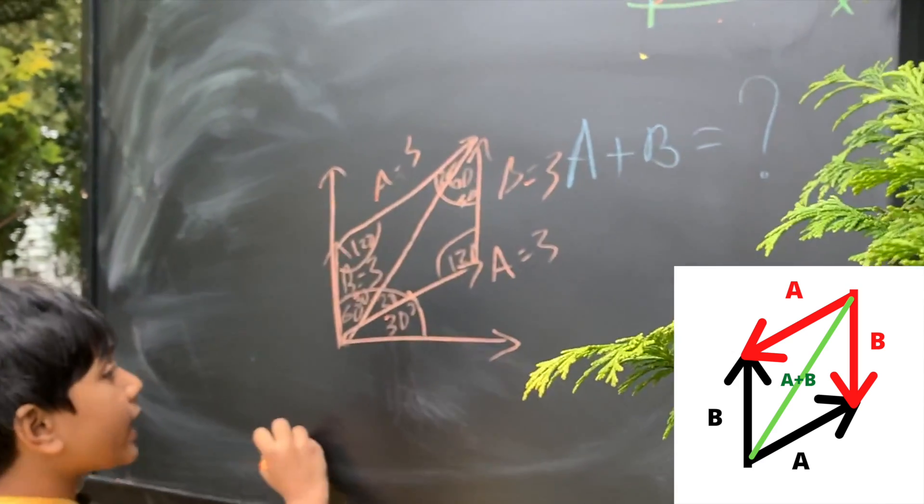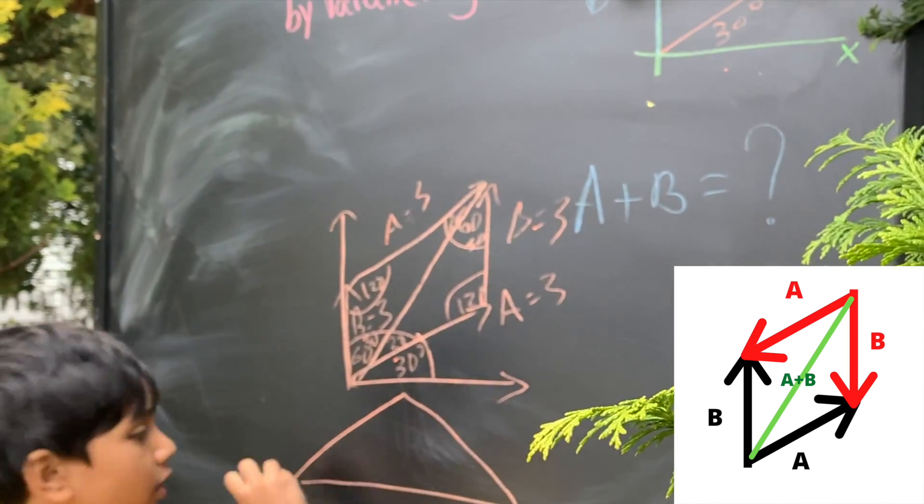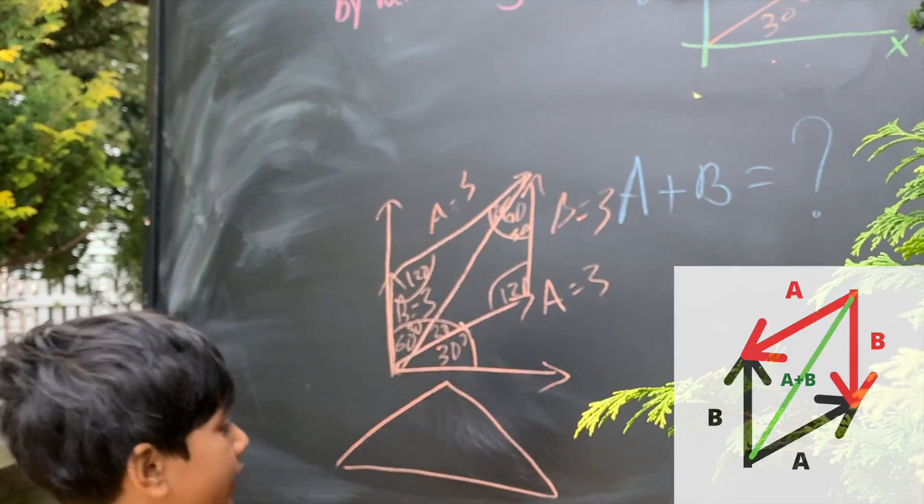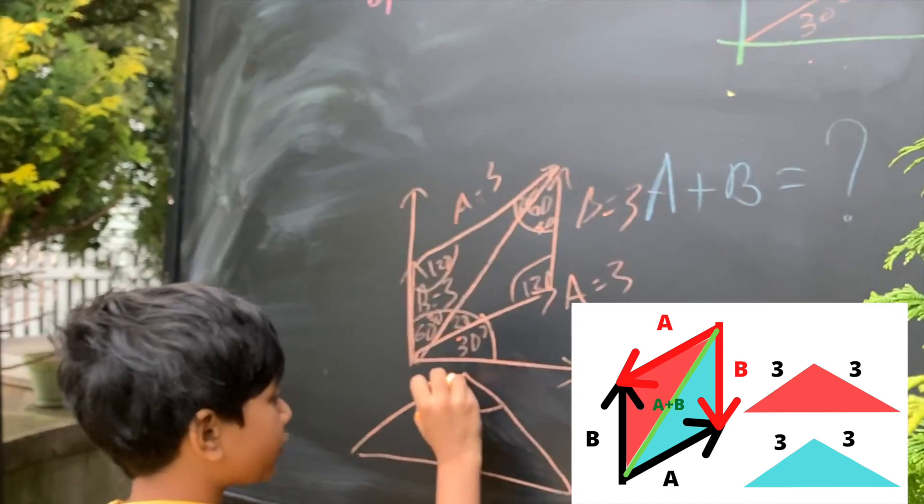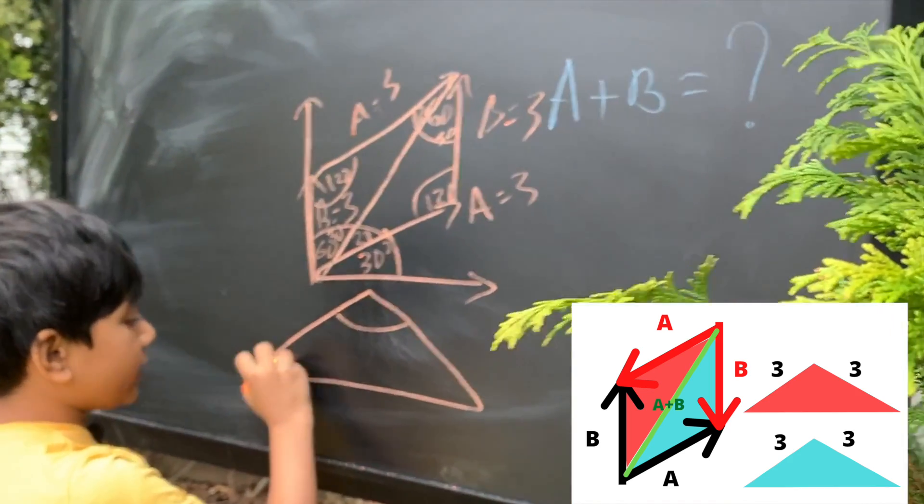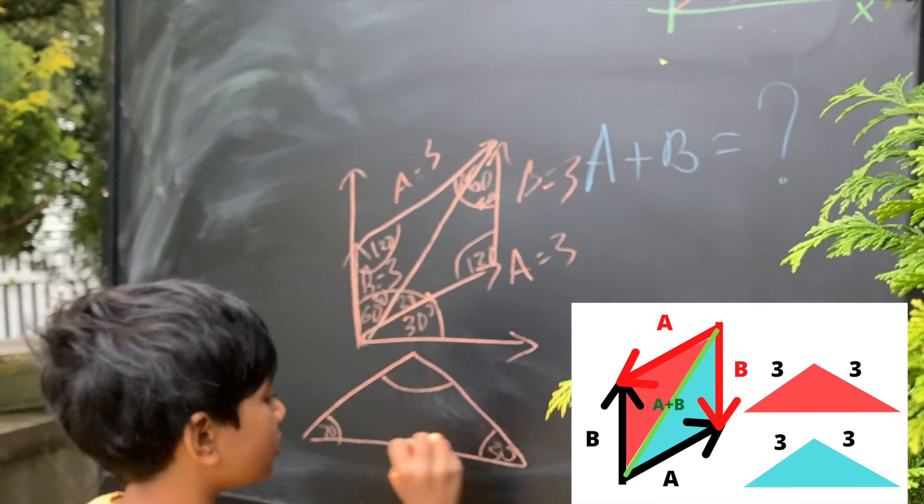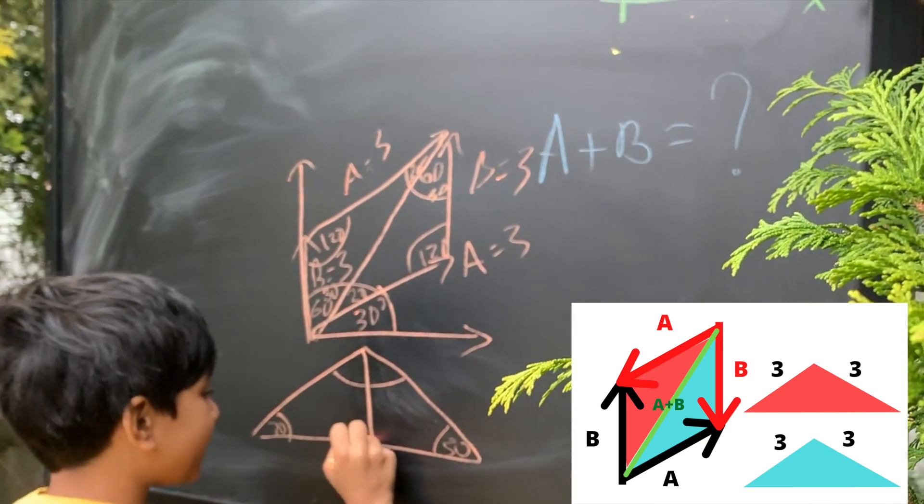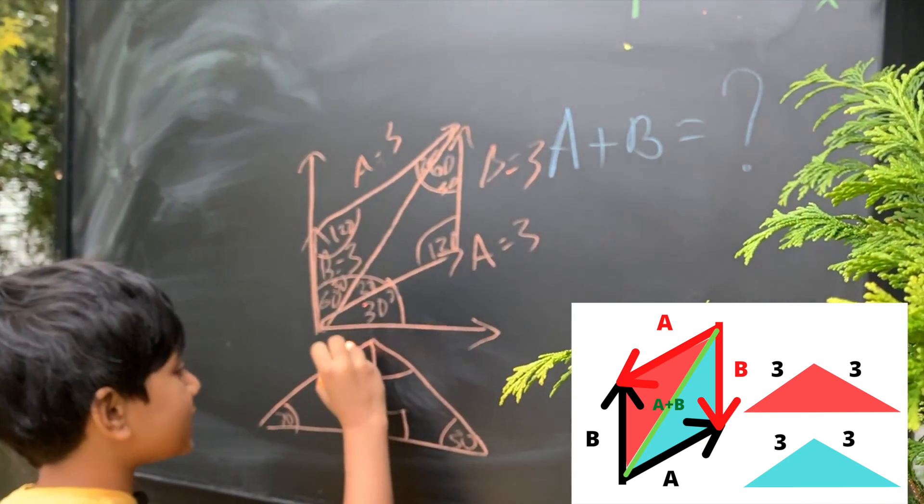And soon, we get two isosceles triangles. So, with the 120 in the center and 30s over here. Now, if we chop it in half, we'll get two 30, 60, 90 triangles.